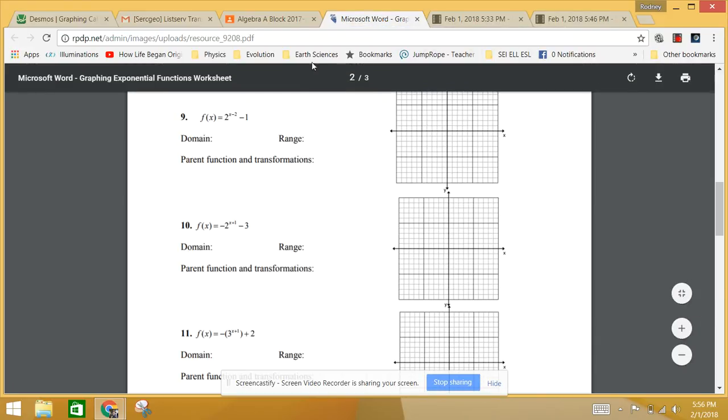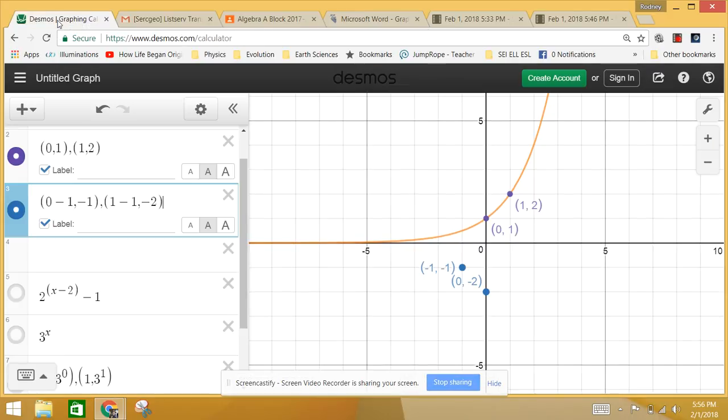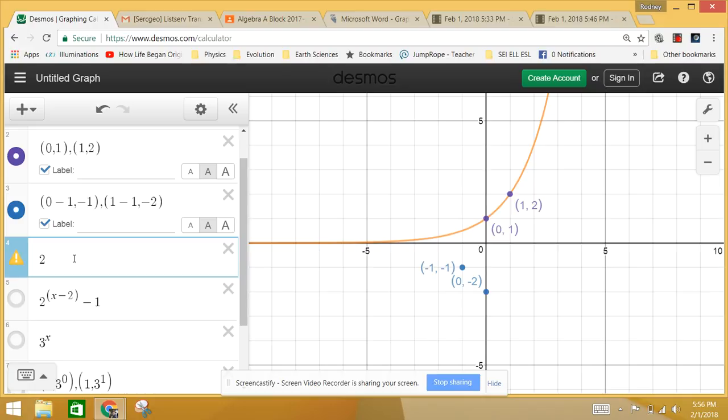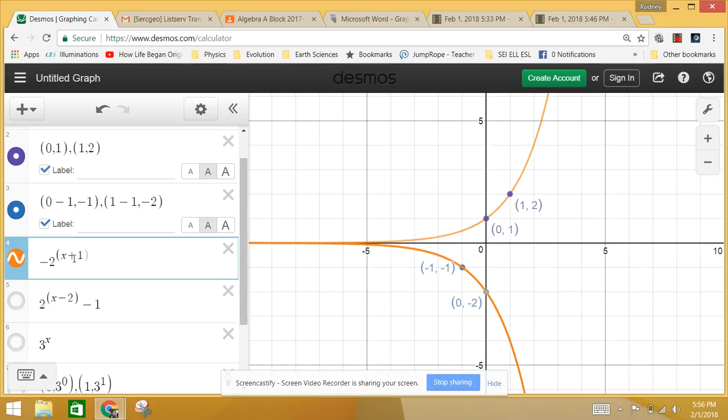And then, so that's sort of my initial function. And I can go ahead and plot that even. And I can say negative two. So I'll start with two to the x plus one. I make that negative. It flips it over.